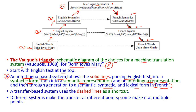The transfer-based system uses the dashed line as a shortcut. The dashed line represents the direct equivalence of English words to French words, English syntax to French syntax, and English semantics to French semantics. This is the shortcut way. Different systems make different transfer points, and some make multiple transfer points — so some languages may have multiple stages.